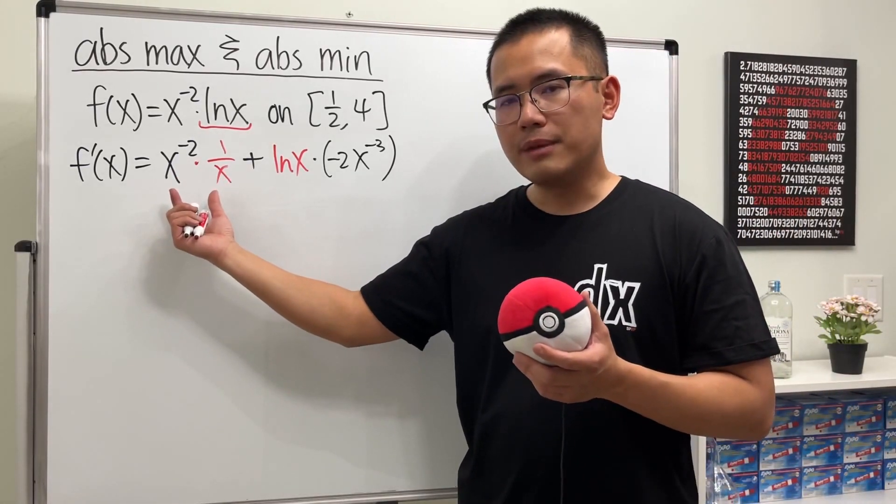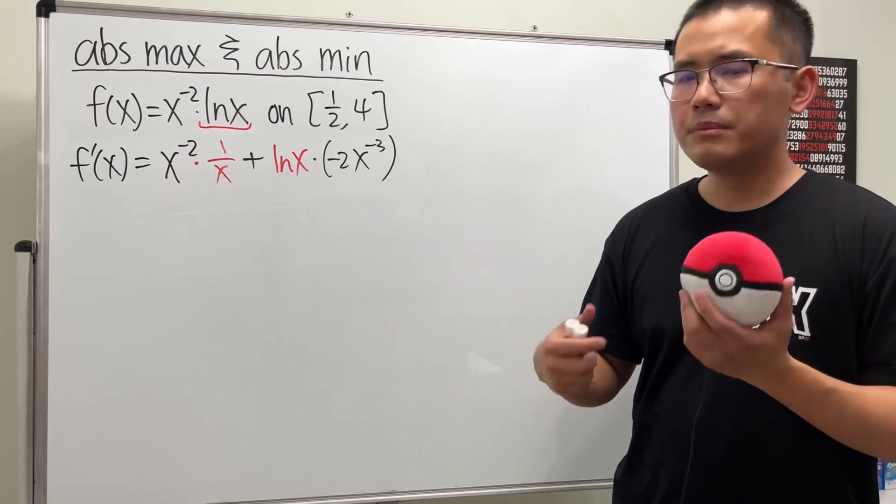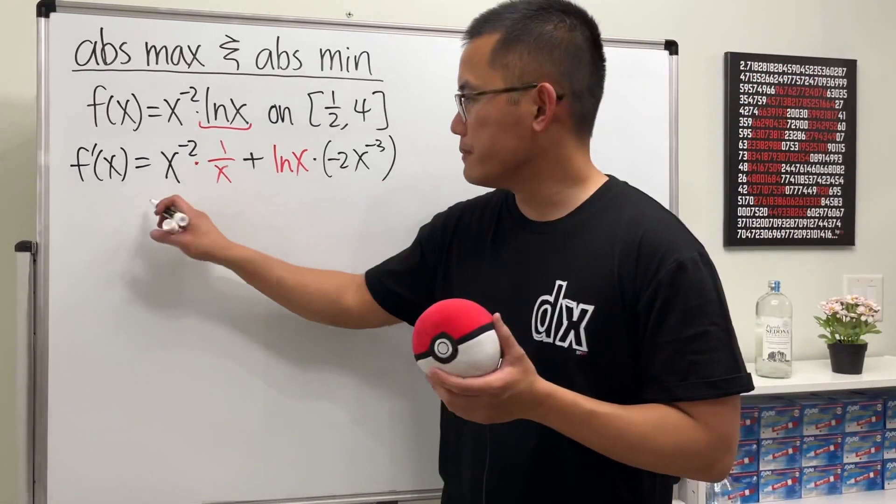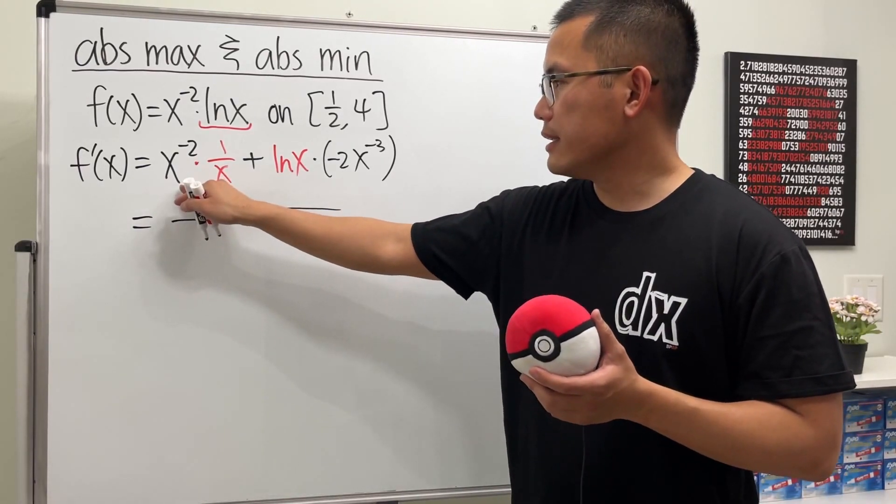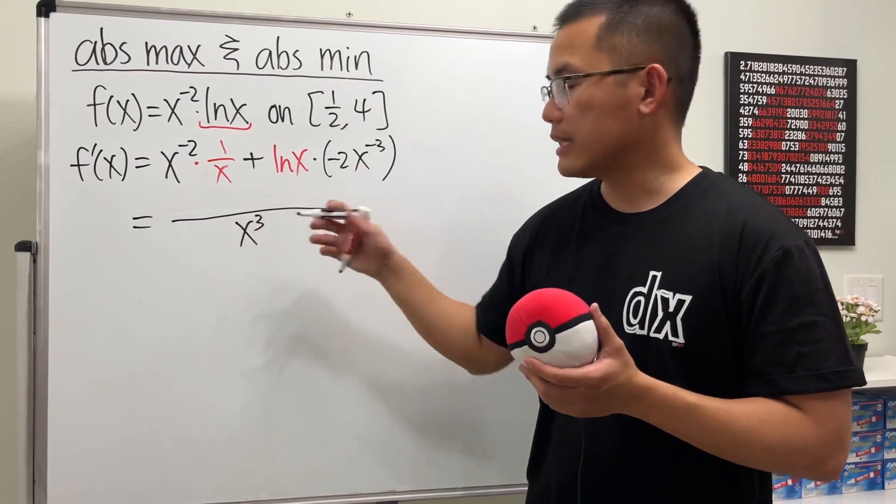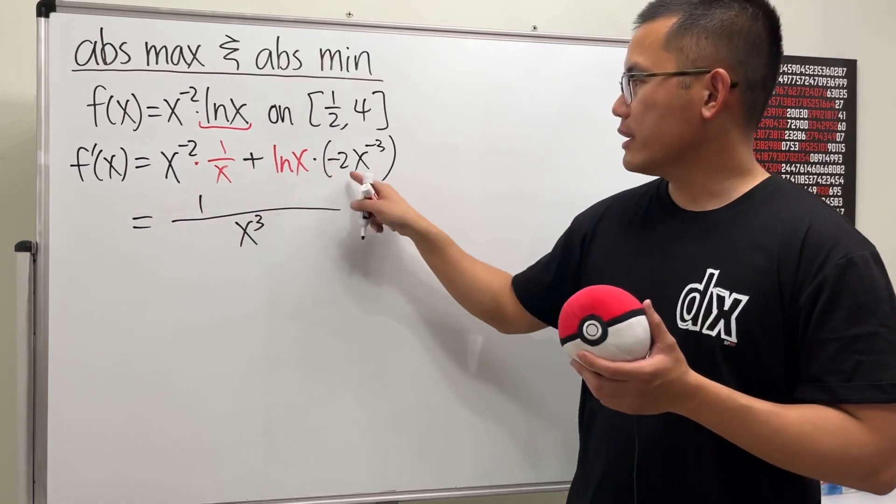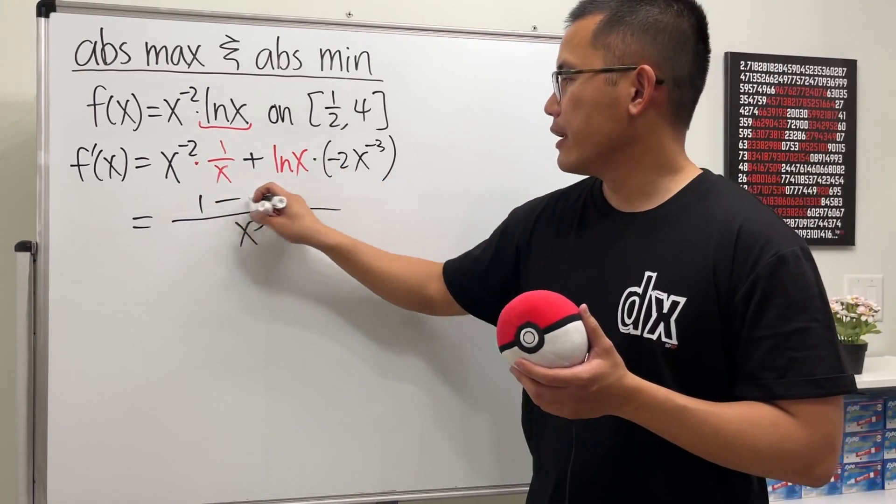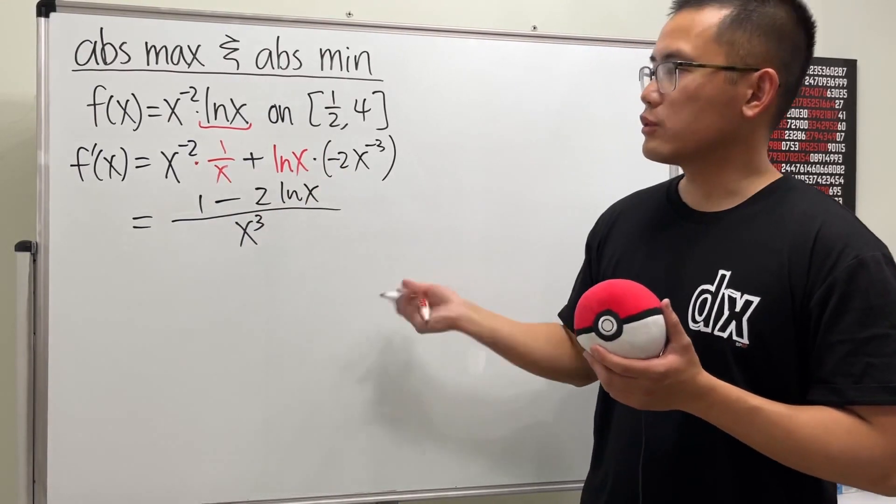This right here is actually the same as x to the negative 3 as well, so we can actually put them together. This has x to the negative 3, likewise that. I will put them down on the bottom, so that's just x to the third power. And from here we have 1, and then from here we have minus, and then 2, and then also the ln x. So that's what we have.